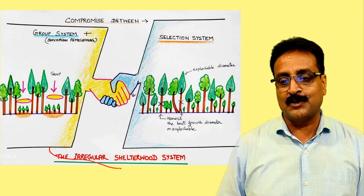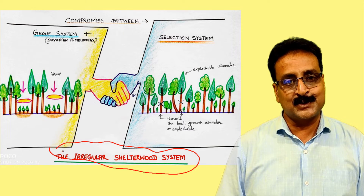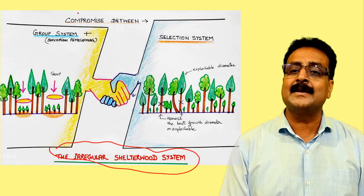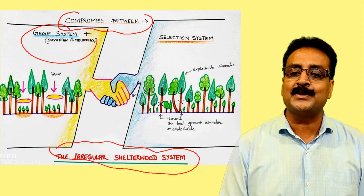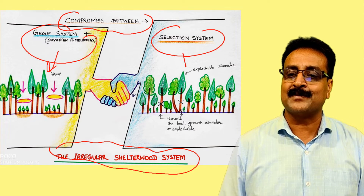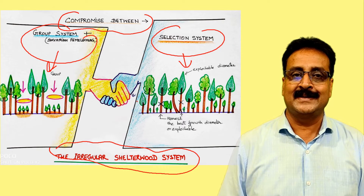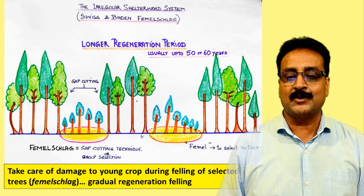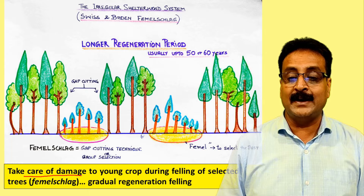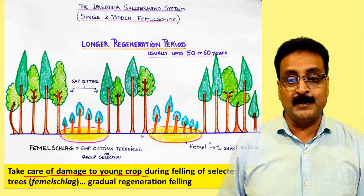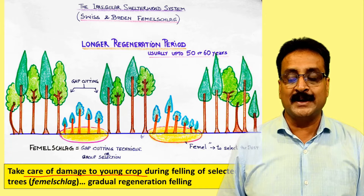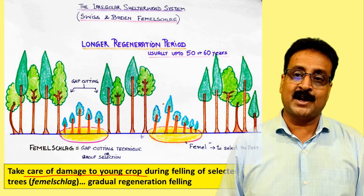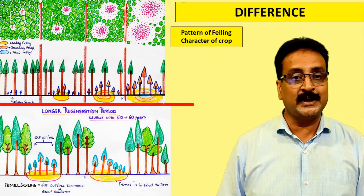The irregular shelter wood system gives you an uneven-aged or irregular forest and is a liberal compromise between the group system and the selection system. We must take care that young crops are not damaged during felling — felling is light and gradual regeneration occurs. Unlike the group system, groups do not merge with each other; it takes a lot of time. This leads us to the differences between the irregular shelter wood system and the group system.